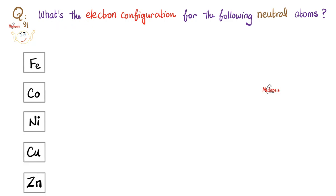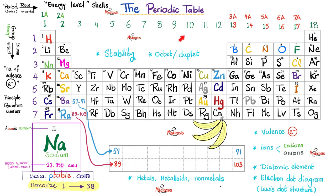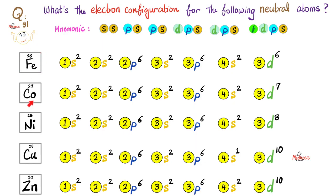Question 91: What's the electron configuration for iron, cobalt, nickel, copper, and zinc? First, find them on the periodic table — atomic numbers 26, 27, 28, 29, and 30 respectively. Using the filling mnemonic, iron (26 electrons): 1s² 2s² 2p⁶ 3s² 3p⁶ 4s² 3d⁶. Cobalt: ends in 3d⁷. Nickel: ends in 3d⁸.